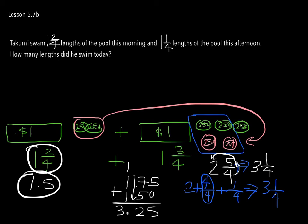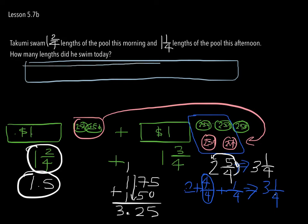So, Takumi swam one and two-fourths lengths of a pool. Now, I'm going to do it a different way here. This is the pool, okay? So this is Takumi right now. Hi, I'm swimming! And he swims all the way down. That's one. Oh, I should probably section this off into half, quarter, quarter. Okay? So that's one.